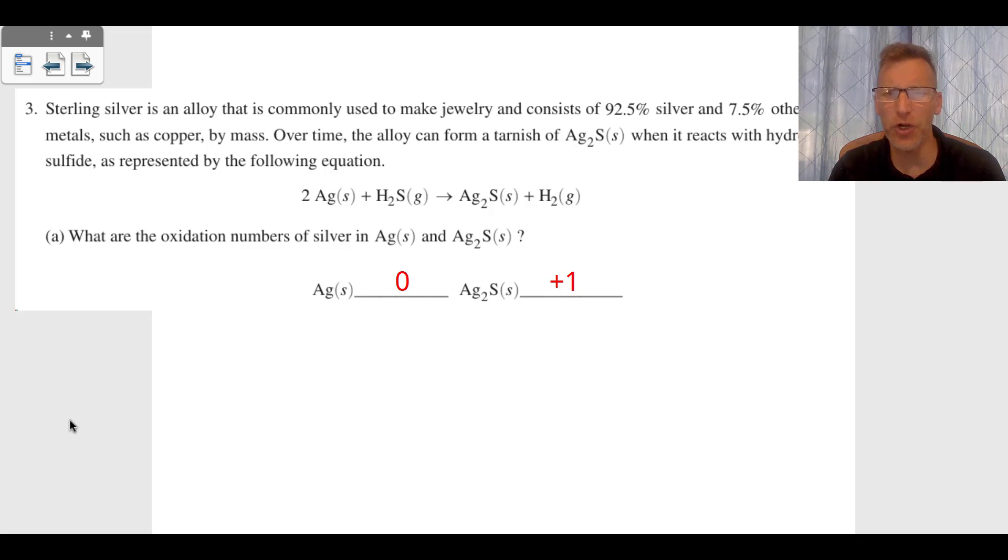The silver solid is reacting with H₂S gas and it's making Ag₂S silver sulfide, kind of a tarnish there, plus hydrogen gas. The first thing they want to know in part A is the oxidation numbers of silver in Ag as a solid and Ag₂S. You can see Ag as a solid, the oxidation number is zero. Any solid or gas overall has a charge of zero. Take a look at Ag₂S. Since sulfur is negative two, the Ag overall has to be positive two. Since there's two of them, each one is positive one.